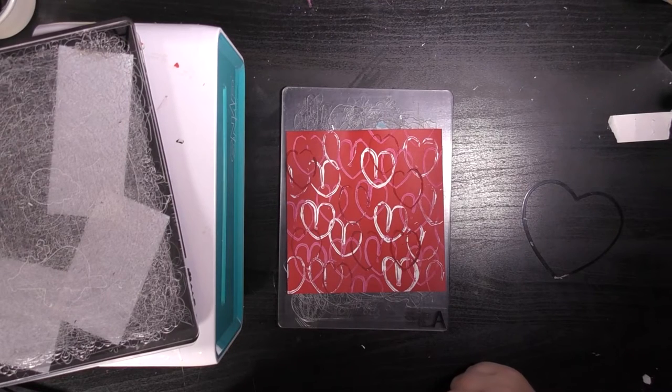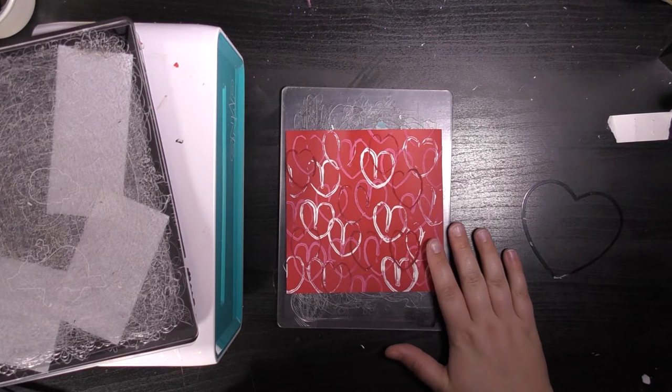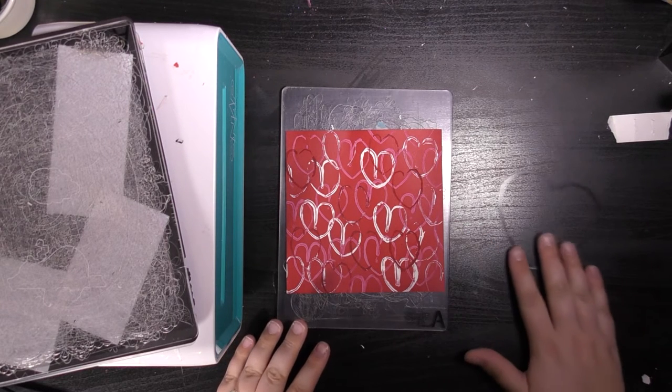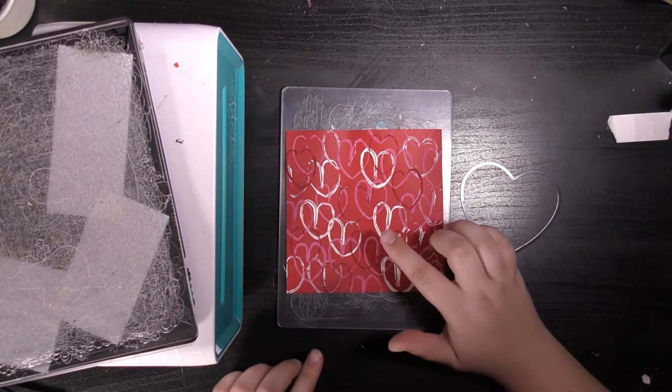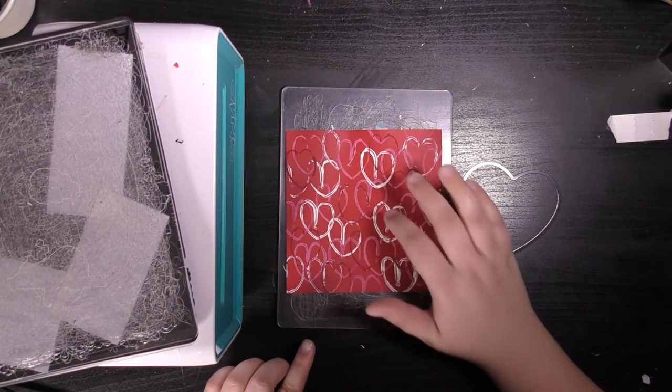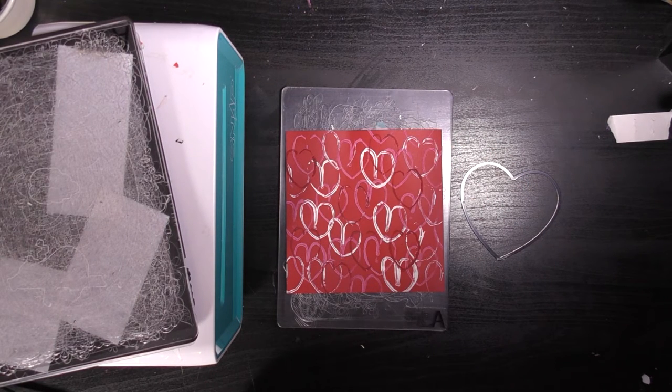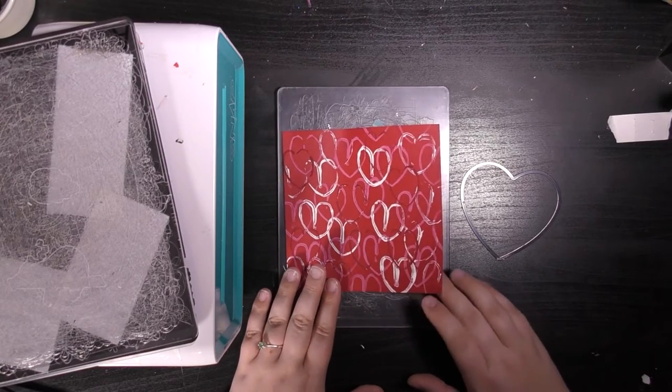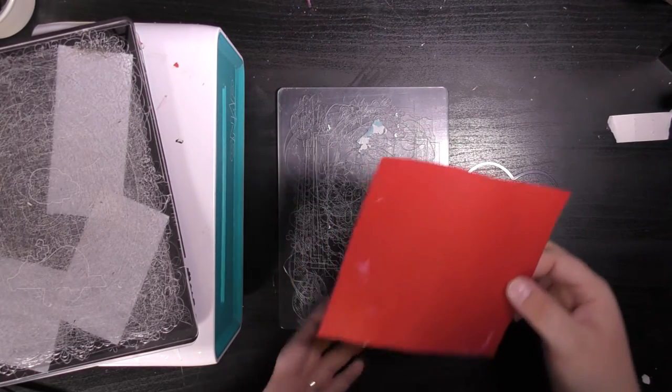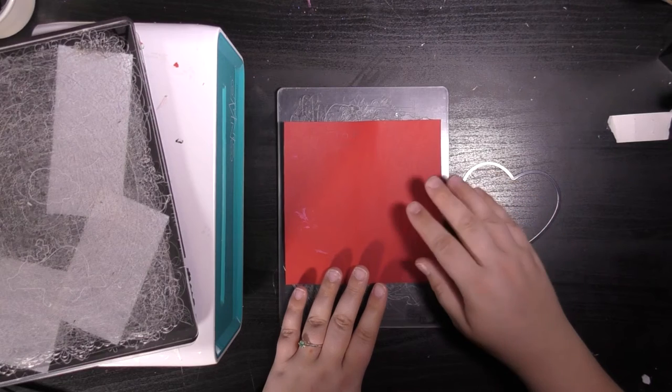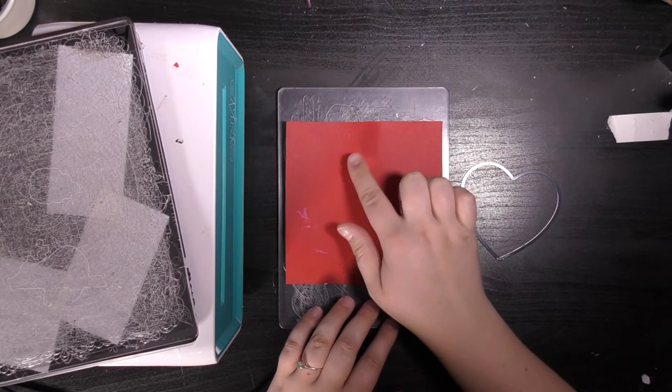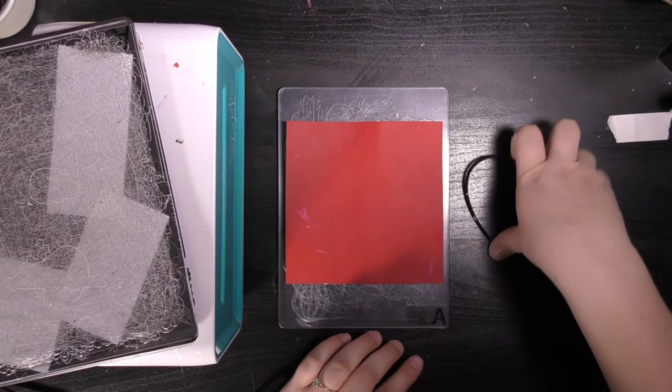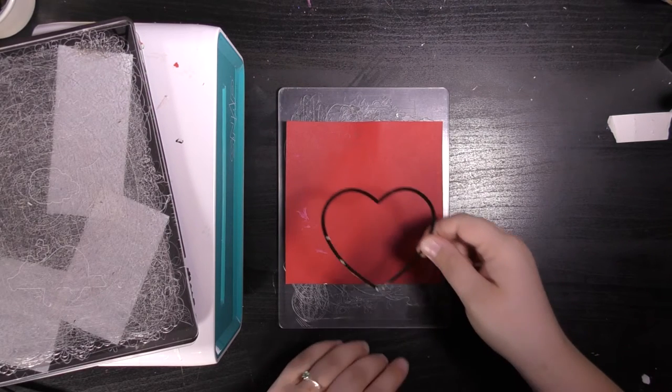We're going to cut a heart shape into the center of our red piece of paper. I'm going to use a die, but if you don't have dies you can use a craft knife or a pair of scissors to achieve the same thing. I'm turning the paper over onto the other side so I'll be cutting from the back to the front. I can see I've still got the word top marked on my paper so I know it's the right way up.